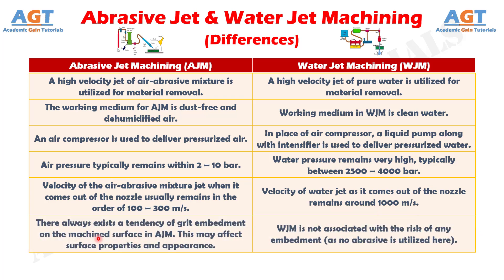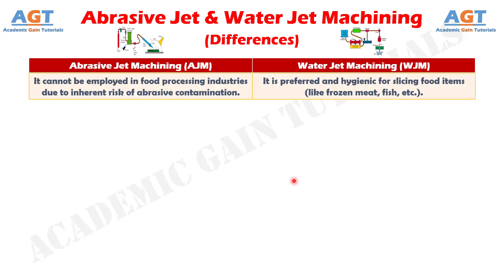Number 6: there always exists a tendency of grit embedment on the machined surface in abrasive jet machining, which may affect surface properties and appearance, whereas water jet machining is not associated with the risk of any embedment, as no abrasive is utilized here. Number 7: abrasive jet machining cannot be employed in food processing industries due to inherent risk of abrasive contamination, whereas water jet machining is preferred and hygienic for slicing food items like frozen meat, fish, etc.